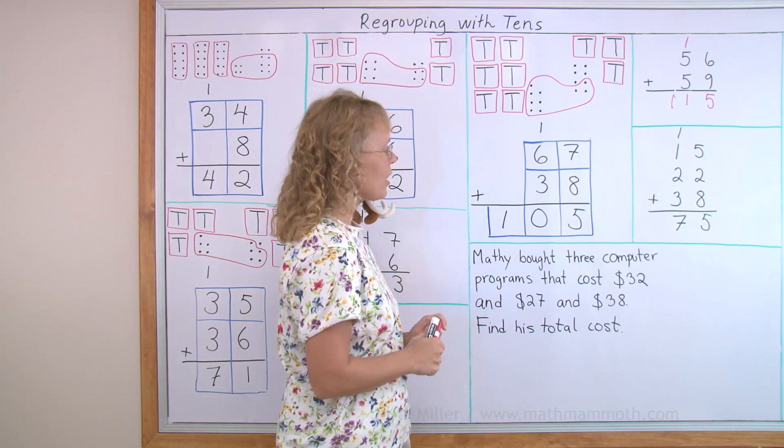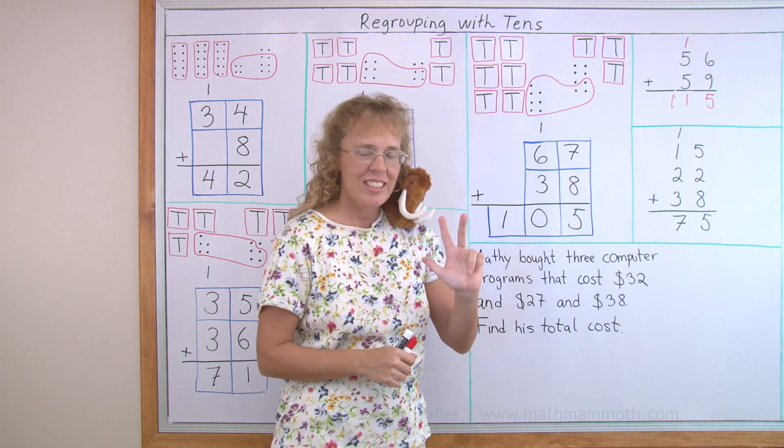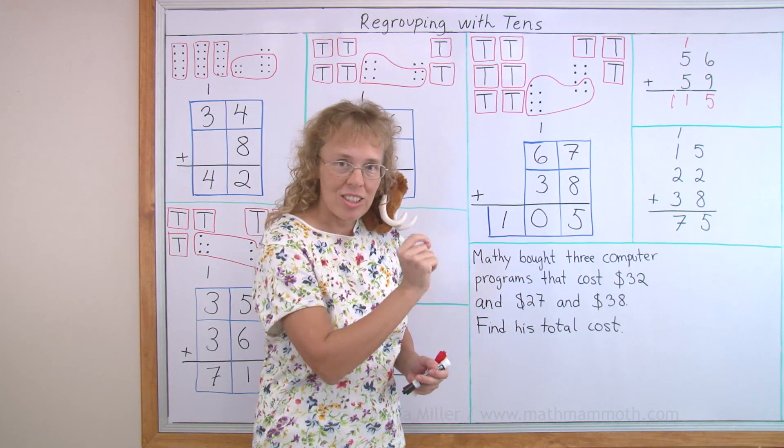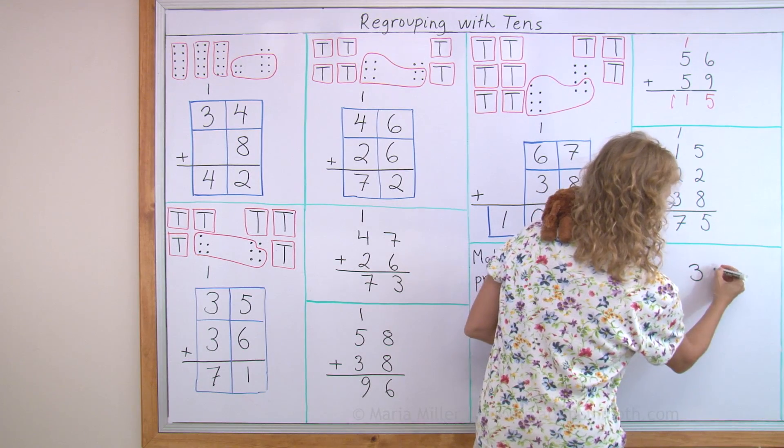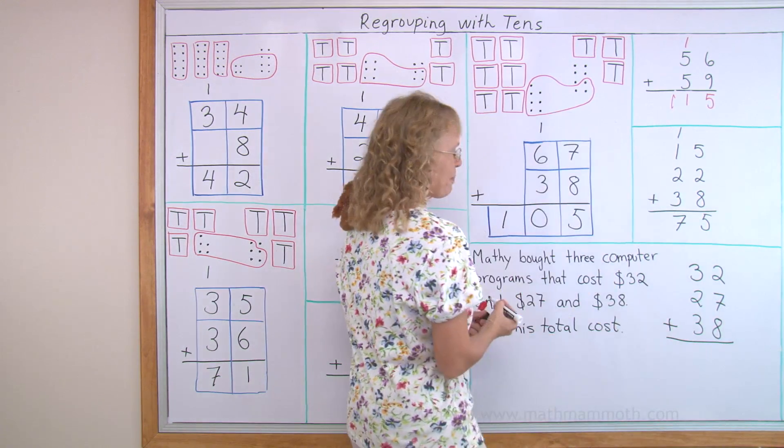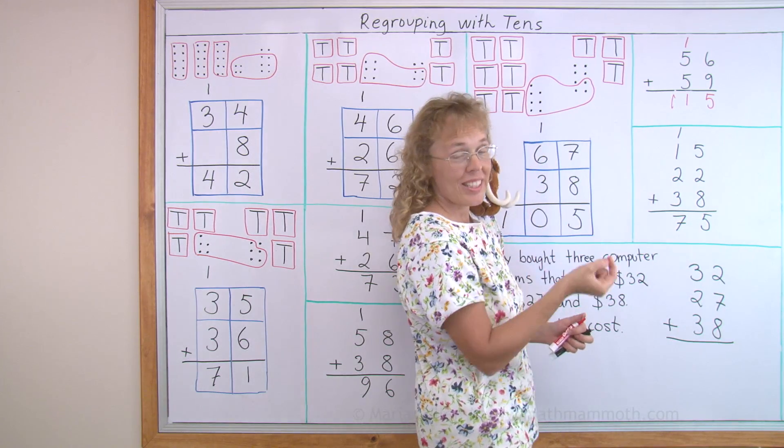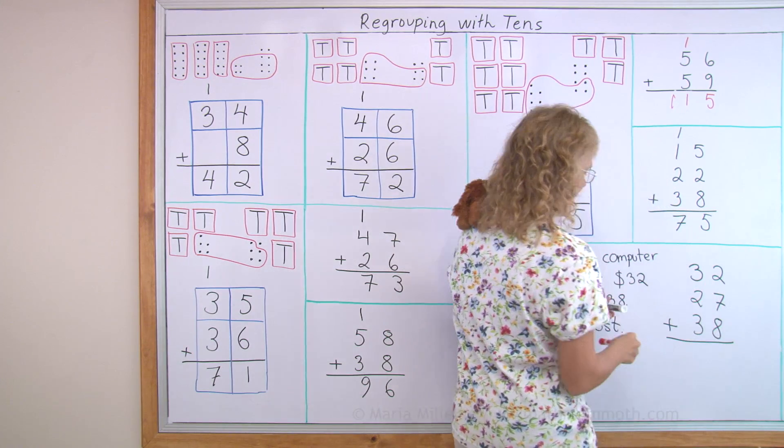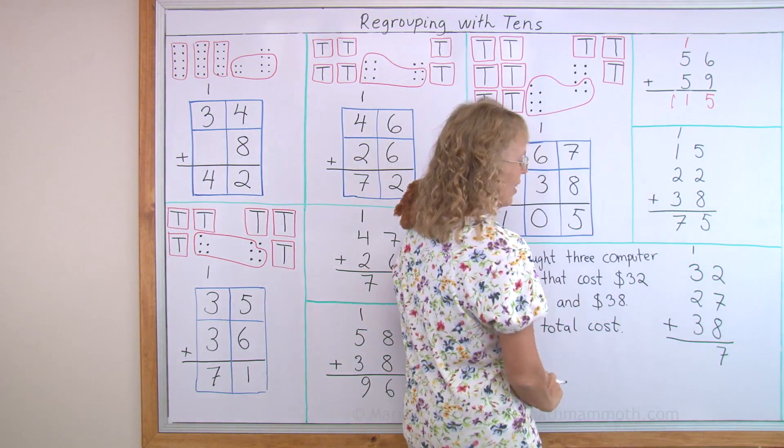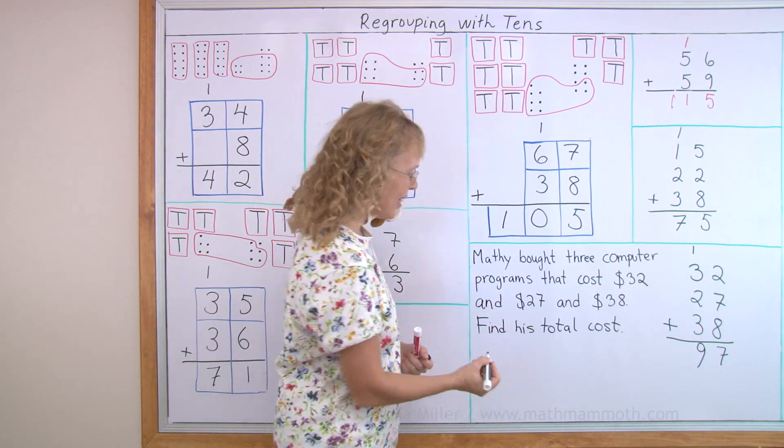Matthew bought three computer programs that cost $32 and $27 and $38. Find his total cost. He bought three things. We need to find the total cost. So we find that by adding. And I'm gonna use the idea from this lesson. Where we're gonna write those numbers under each other. I have space here. So let's write it here. Thirty-two and twenty-seven and thirty-eight. And then a line and then a plus. Now we're ready to add first here in the ones. Two and seven and eight. Again, I'm gonna add two plus eight first, because that makes ten. So two plus eight, ten. Plus seven, seventeen. Seventeen, remember it's one ten over here and seven here. One ten, seven. And then my tens. One plus three plus two plus three. That's gonna be nine. So his total cost is $97.